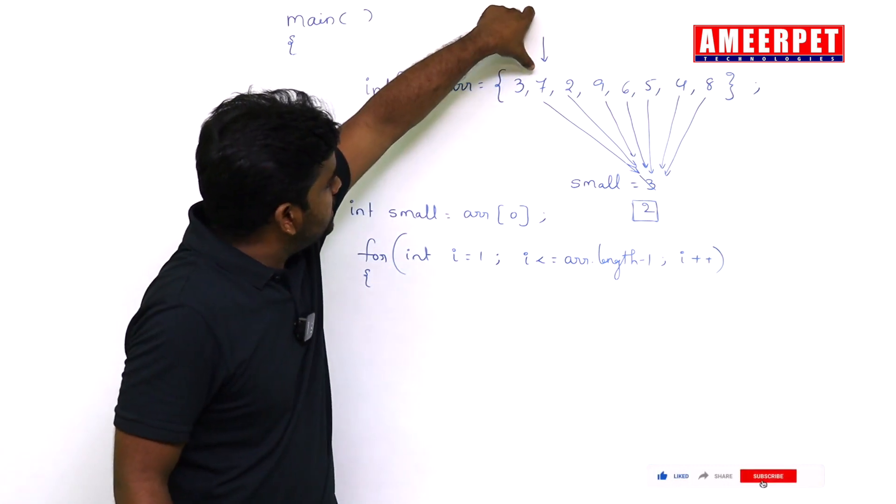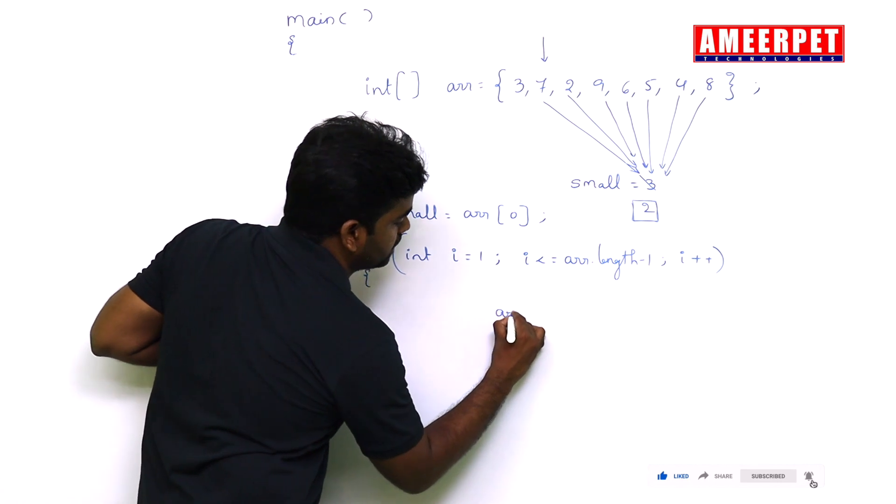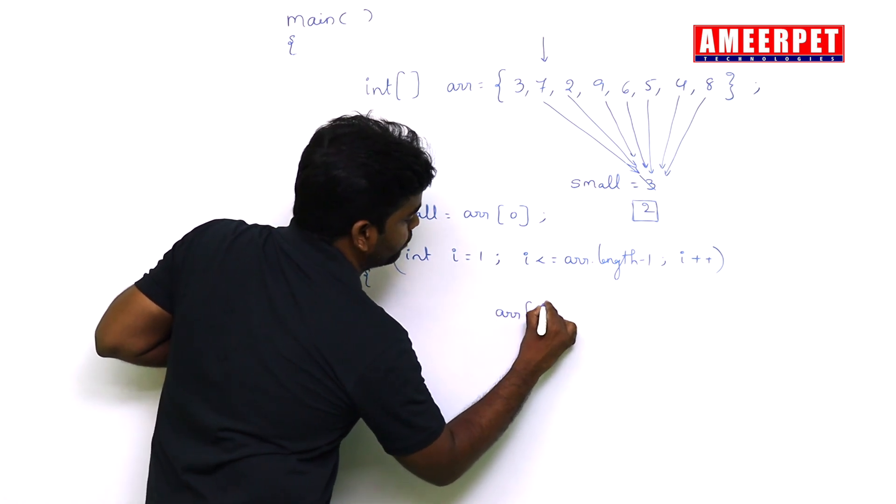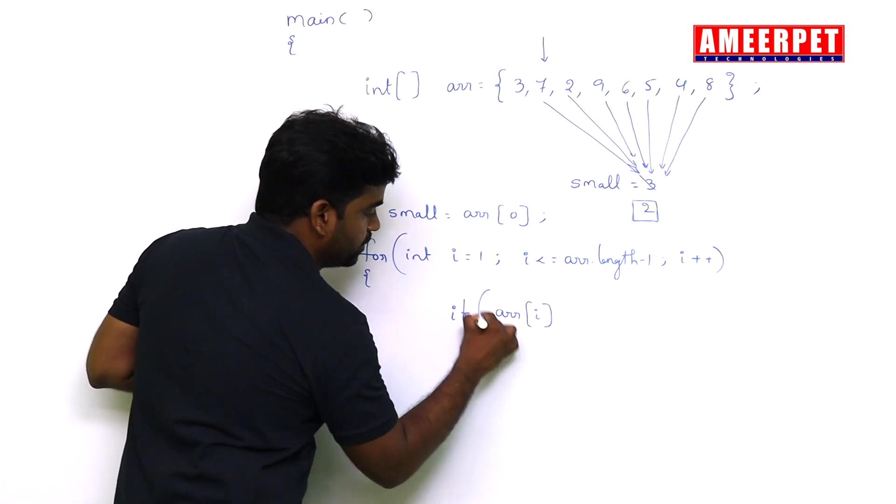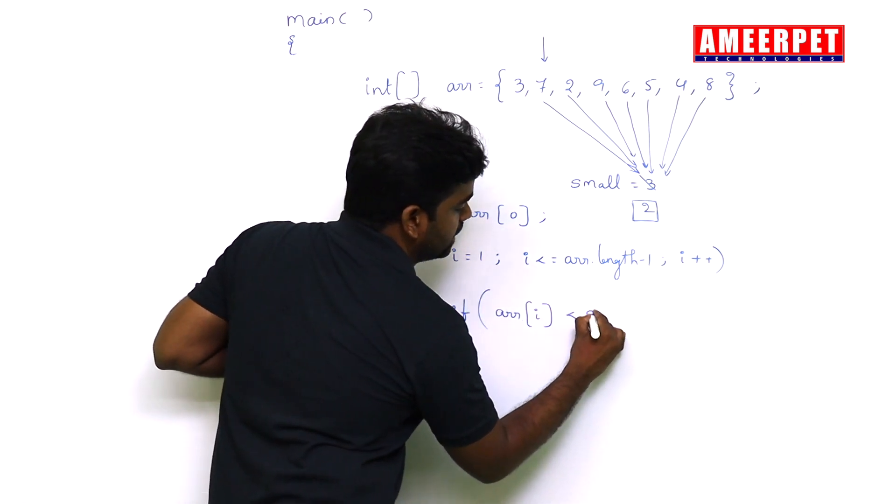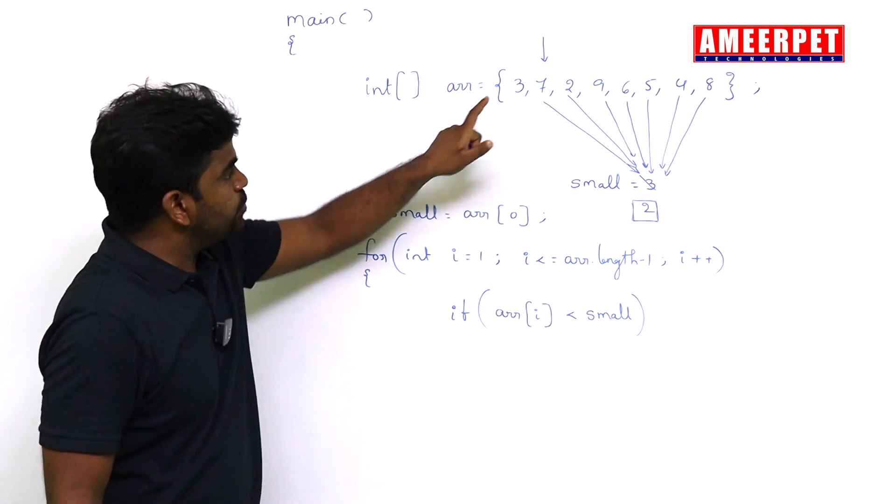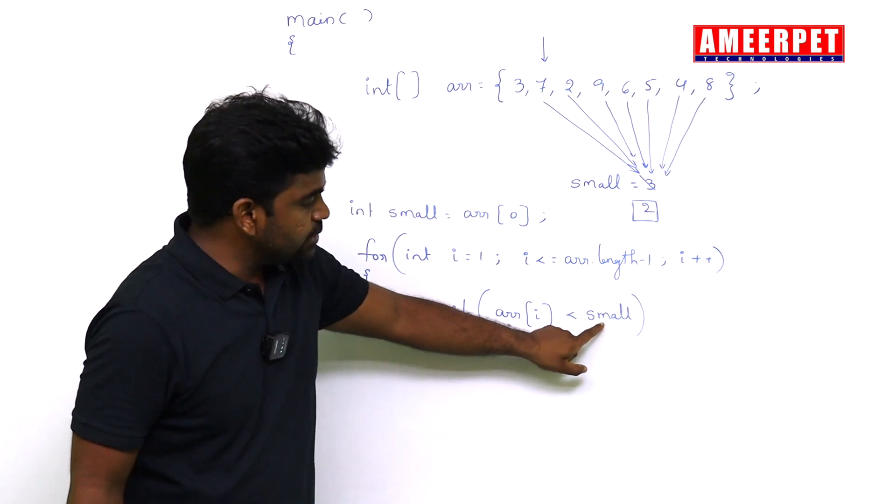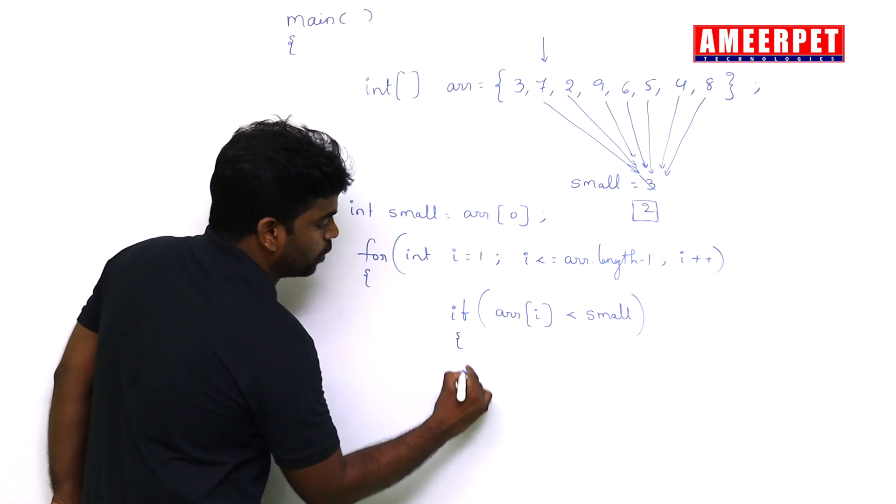Every time we're checking this element 7, that is arr[i]. If that index element is less than the small value already considered... Suppose 7 is less than small, is it true? No, false. So the if block will not execute.